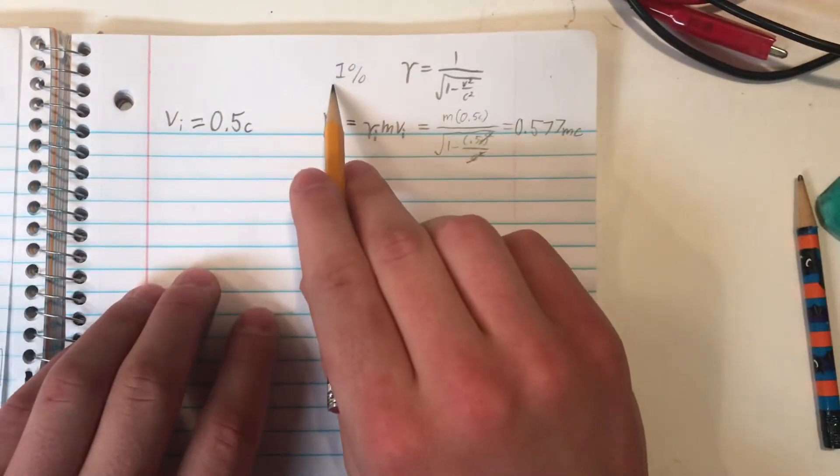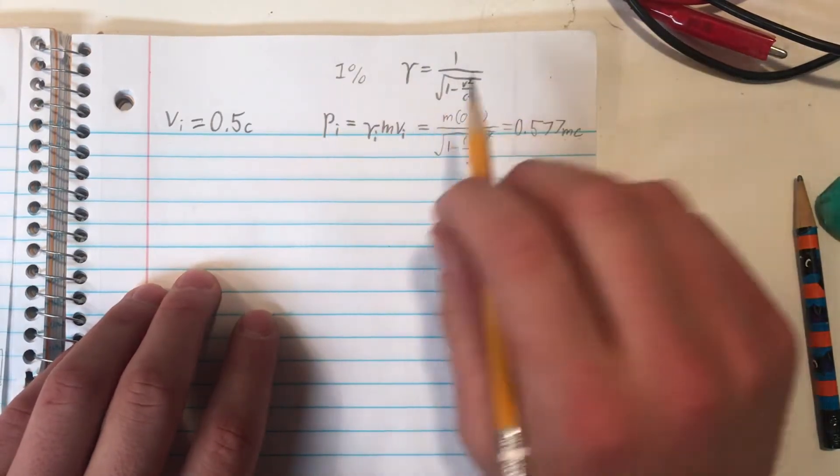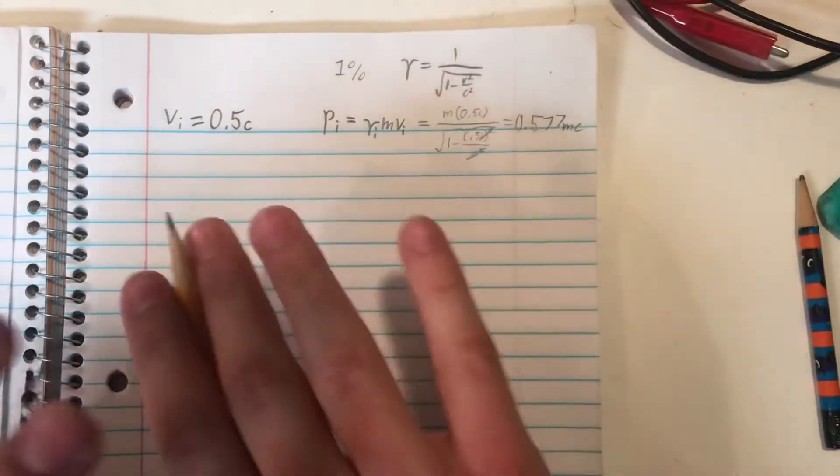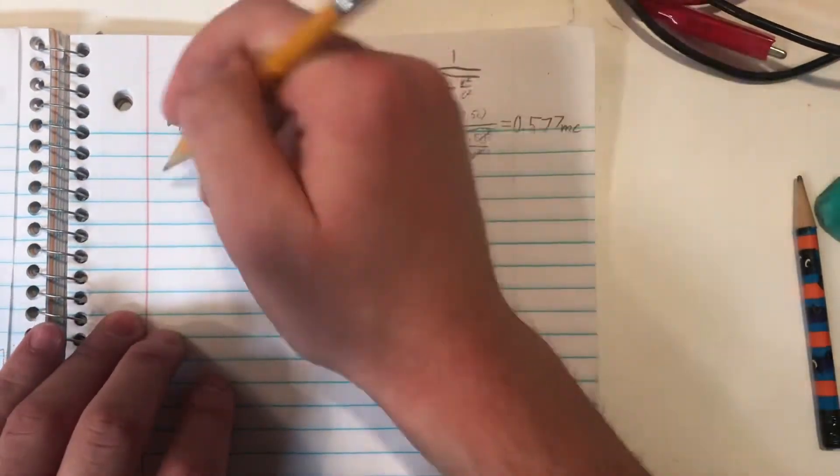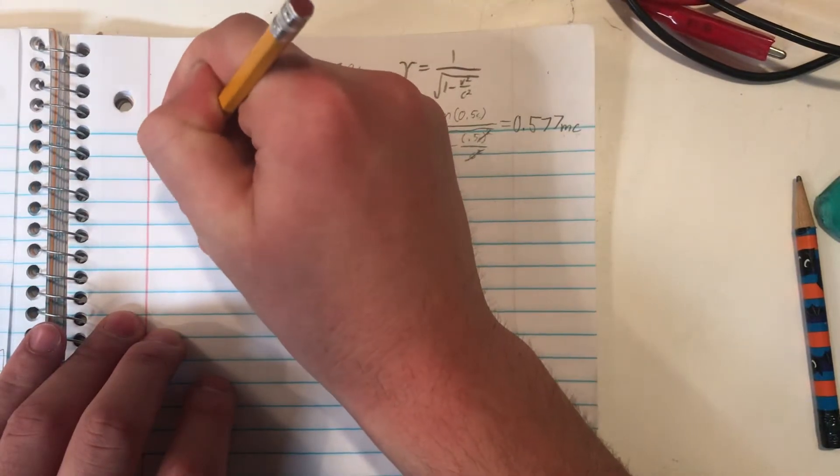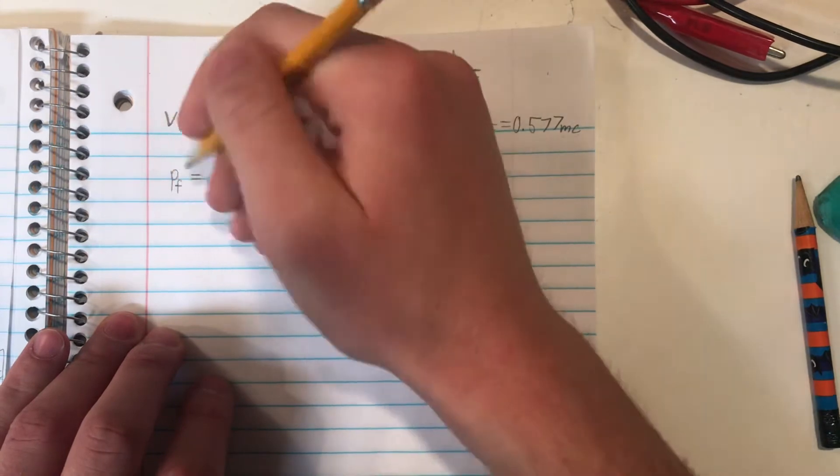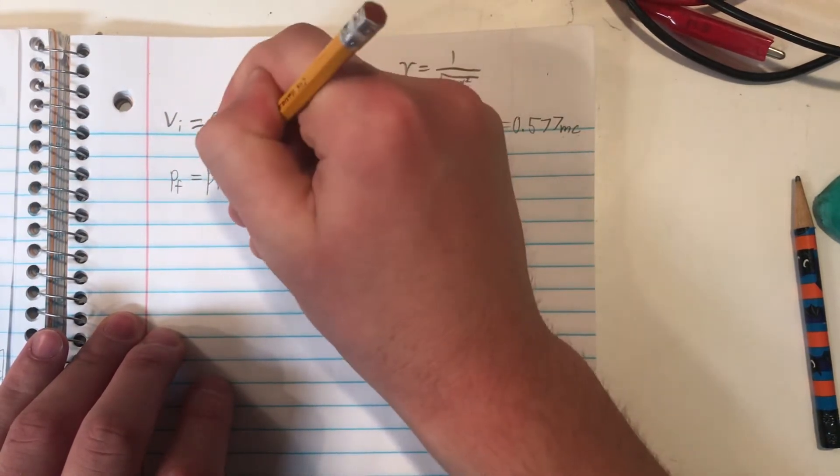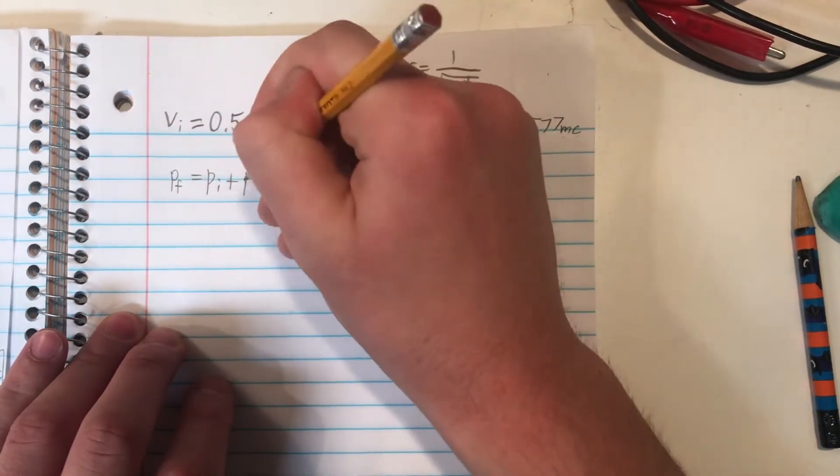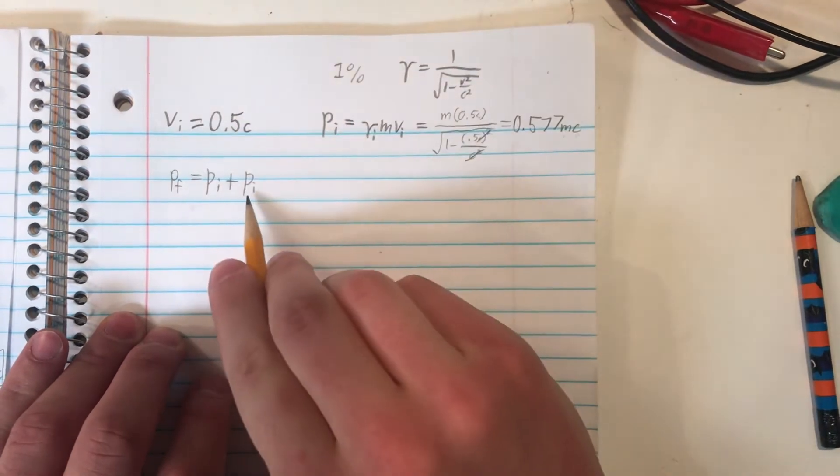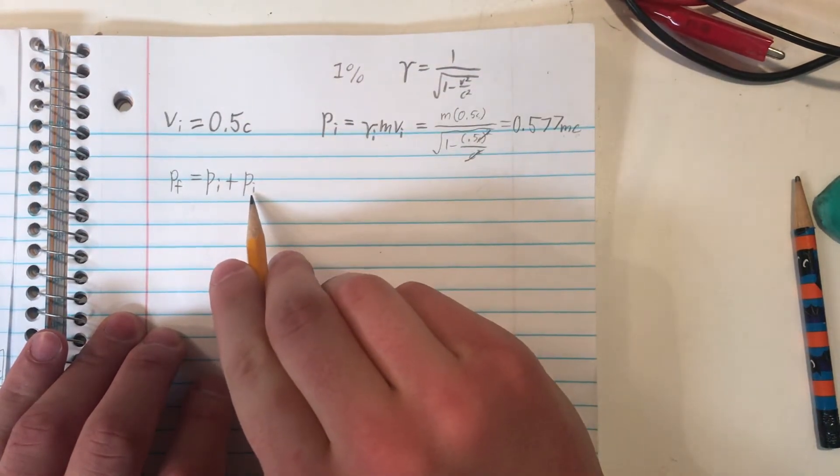We're looking for a change in some momentum, in my case 1%. So that means that the final momentum of the system, the final momentum of the particle, will be p sub f, final, equal to the initial momentum, plus the initial momentum again, except to whatever percent we're looking for.